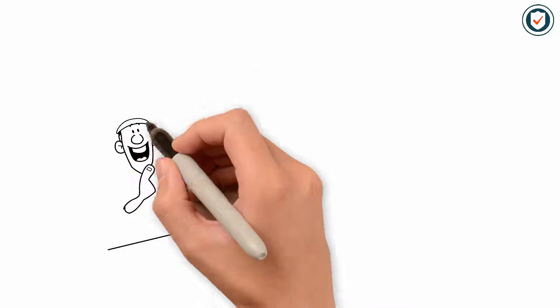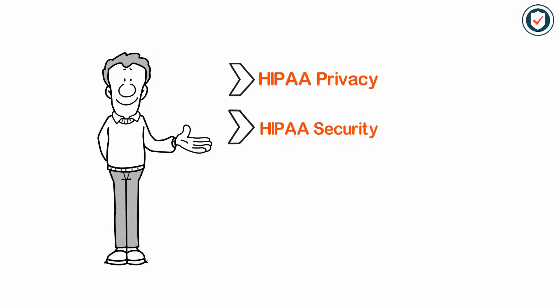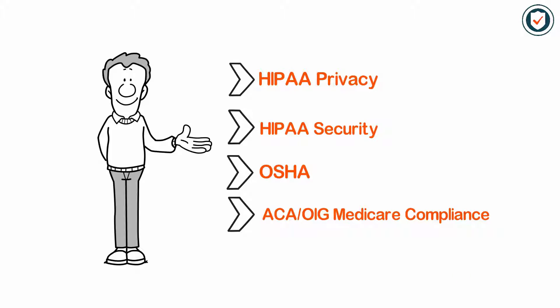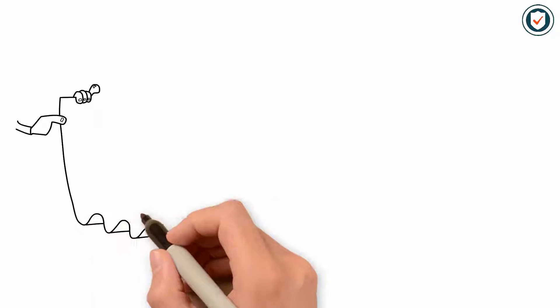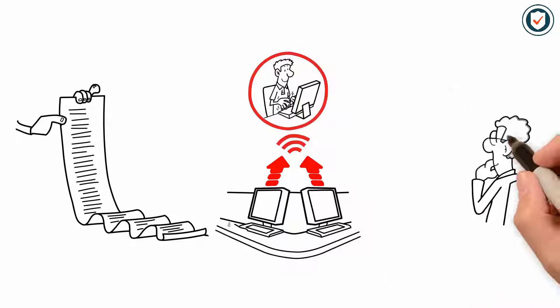We supply all continually updated policies online for HIPAA privacy and HIPAA security, as well as policies for OSHA, ACA, OIG, and Medicare compliance. These policies and their updates are electronically distributed to all staff members with provable verification of individual receipt.